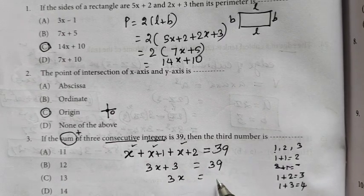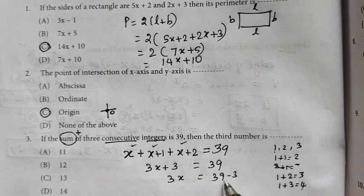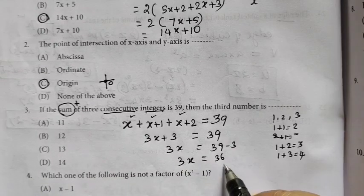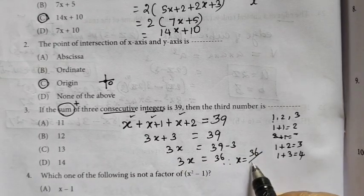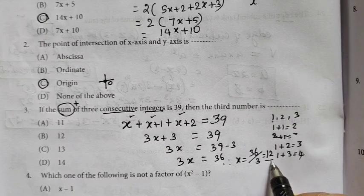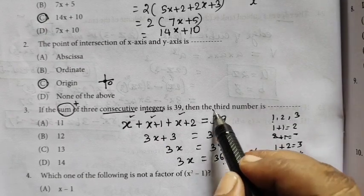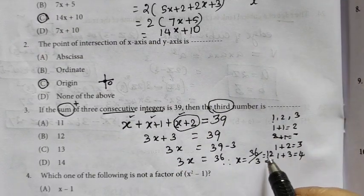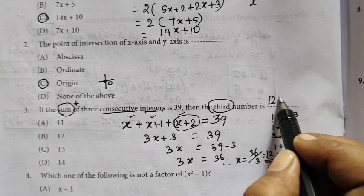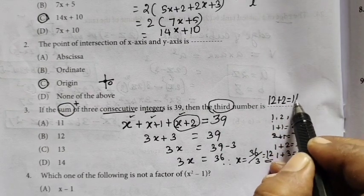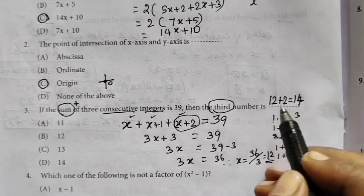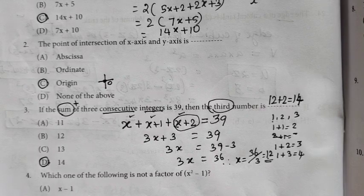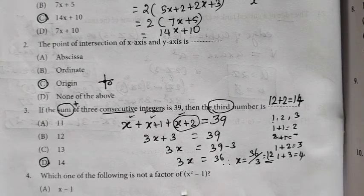Therefore, 3x equal to 39 minus 3, 36. Therefore x equal to 36 by 3, 12. The question is the third number. Third number is x plus 2. So x equal to value is 12. So 12 plus 2 equal to 14. This is the answer.